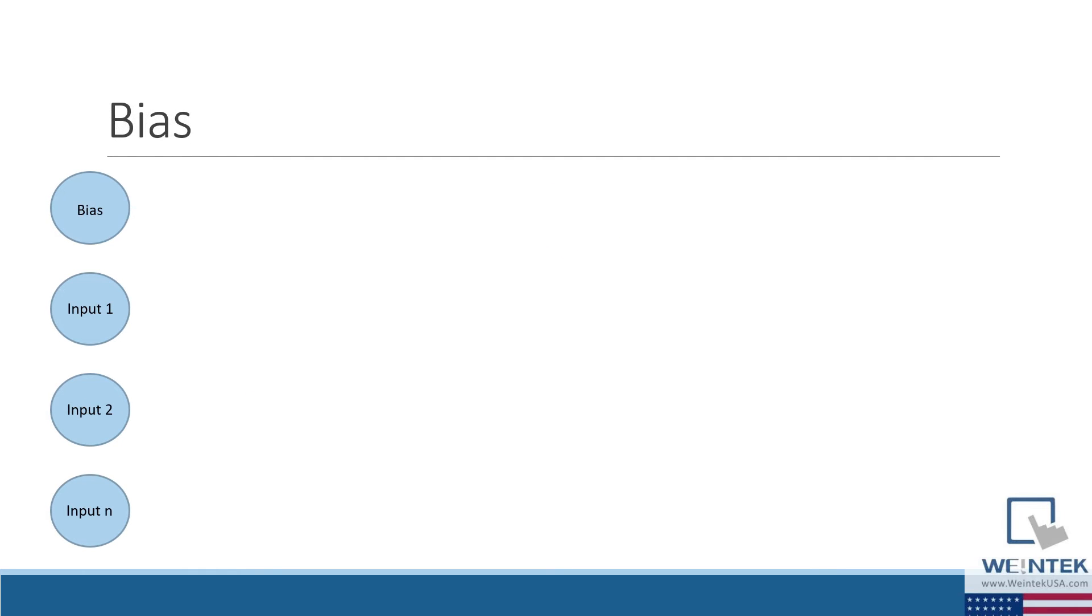In addition to our inputs, we also include an additional term called a bias. A bias has the effect of shifting the activation function, which increases the flexibility of our algorithm. The bias is implemented as an input with a constant value of 1, meaning that weight 0 is applied as a constant within our summation.